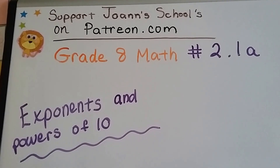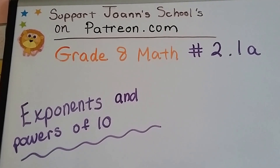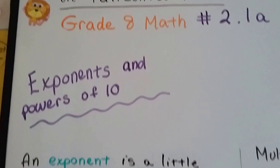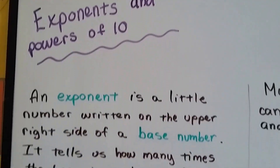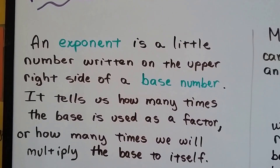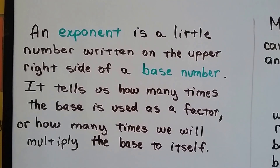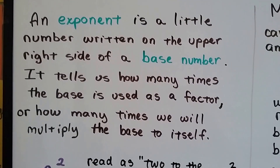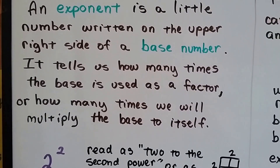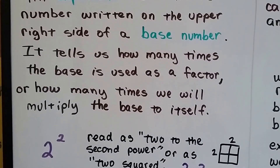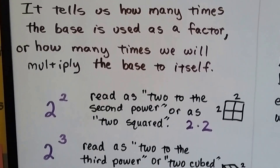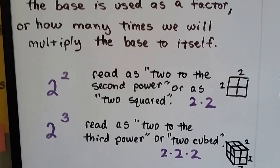Grade 8 math, number 2.1a: exponents and powers of 10. An exponent is a little number written on the upper right side of a base number. It tells us how many times the base is used as a factor, or how many times we'll multiply the base to itself.